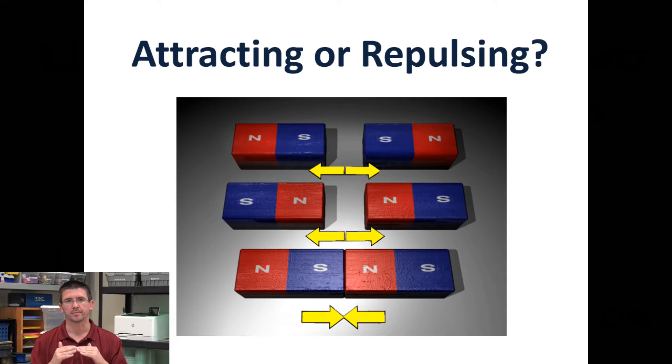But anytime the south and south poles of magnets are together, they'll repel. Anytime the north and north poles are together, they'll repel as well. But if we have north and south, regardless of types of magnets, size of magnets, those magnets will want to stick together.